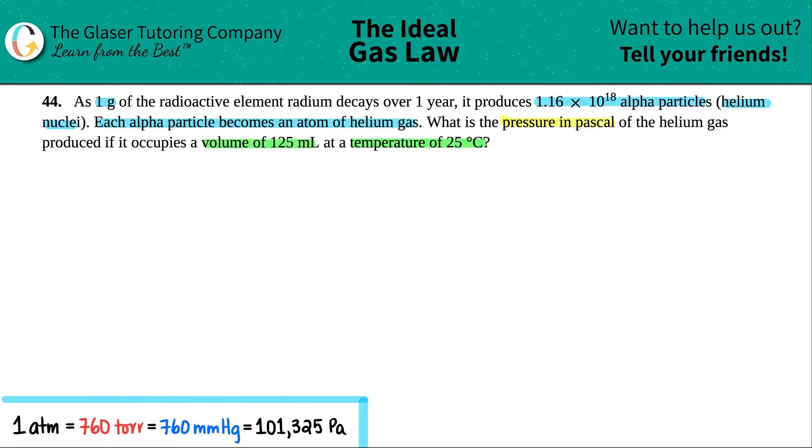But they specifically said it was helium gas, and that's the number that we care about. So what I'm going to say is that it started off with 1.16 times 10 to the 18th alpha particles. And alpha is represented by this little alpha symbol here. So that's alpha particles. And they're saying that all of this, each one of them becomes an atom of helium gas. So now I know that I have 1.16 times 10 to the 18th helium atoms. So maybe we could do something with this, because this is the actual gas.